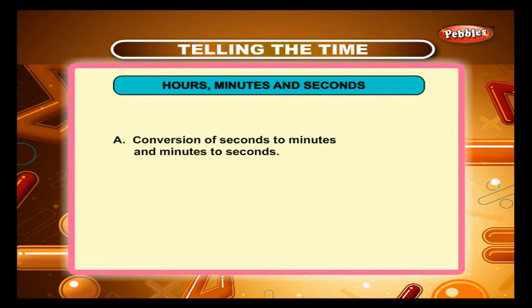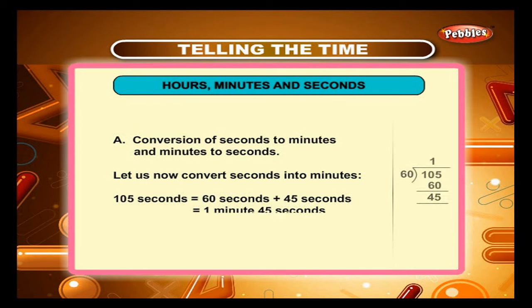Sum A: Conversion of seconds to minutes and minutes to seconds. Let us now convert seconds into minutes. 105 seconds is equal to 60 seconds plus 45 seconds, which is equal to 1 minute and 45 seconds.